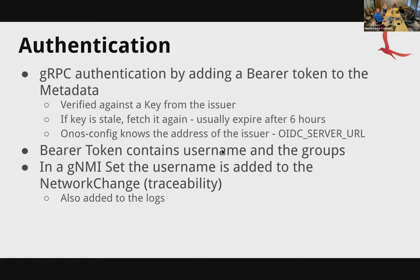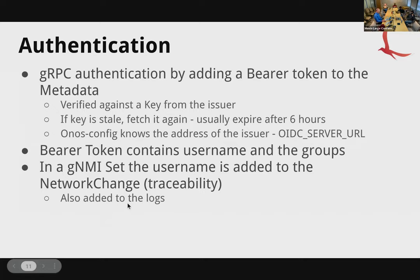The bearer token contains the username of the caller and the groups they belong to. When you do a GNMI set, the username is added into the network change, giving you traceability — you can see who made that network change and when. This gives an audit-level capability, necessary for Ether. There's also a trace statement in the logs showing who made the call to create the network change.